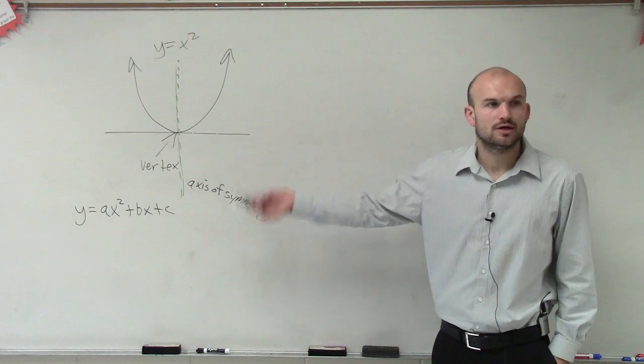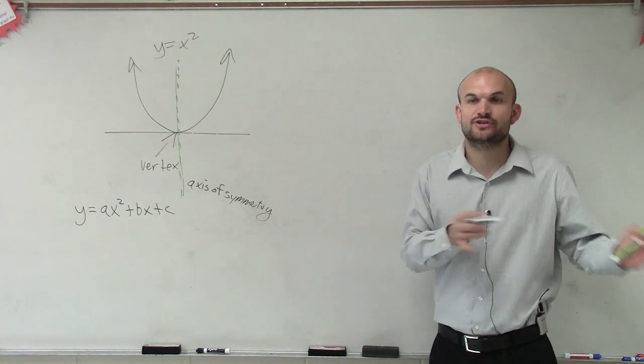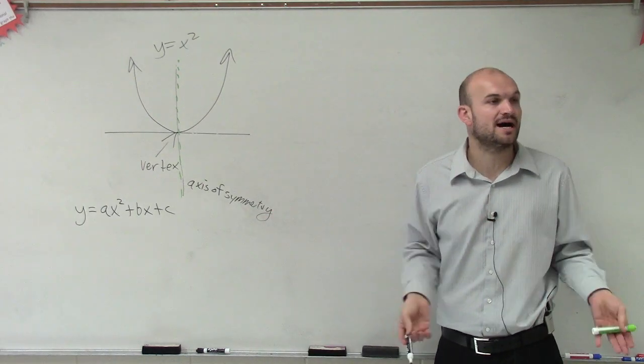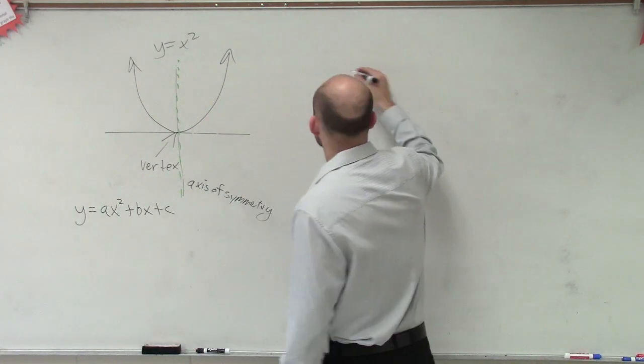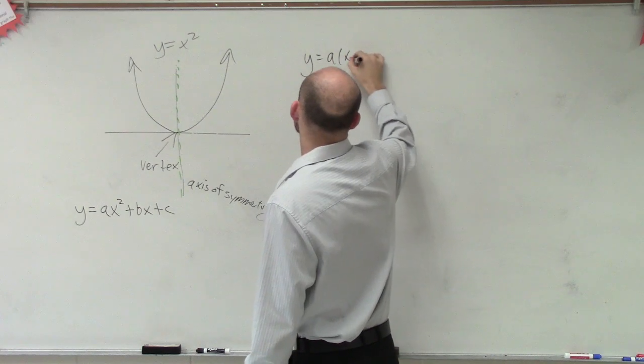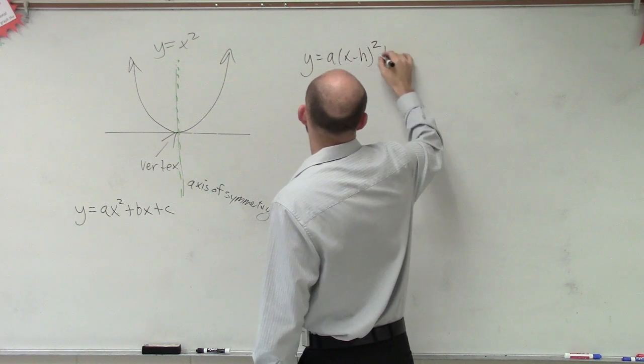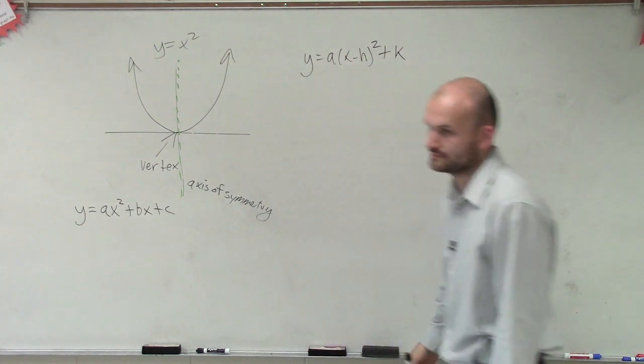And then we also worked on how to find transformations. How do you shift the graph up, down, left, right? And to do that, we had to complete the square to get us to this formula, y equals a times x minus h squared plus k.